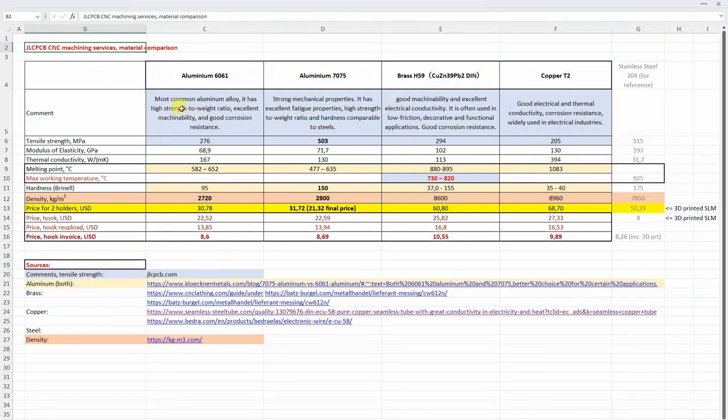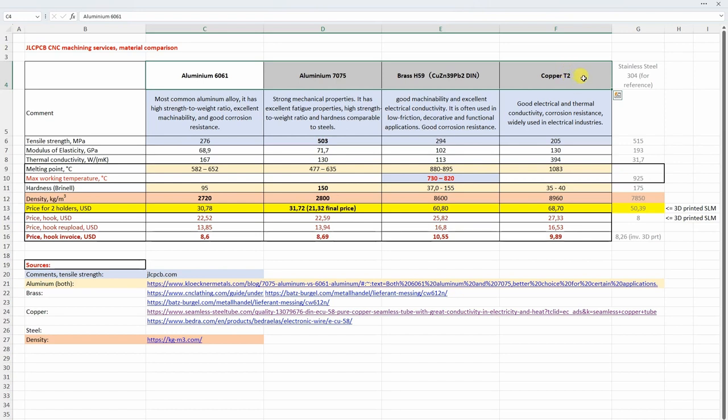In this Excel table I summarized the specifications of these four metals available for CNC machining and also included some stainless steel data just for reference. This Excel table is reviewed by JLCPCB and they even entered some data themselves. Let's start with 6061. This is the most common aluminum alloy and it has great strength to weight ratio, excellent machinability, and good corrosion resistance.